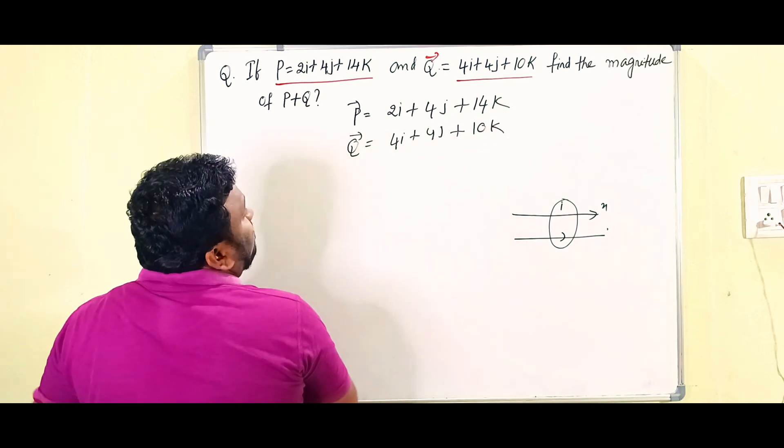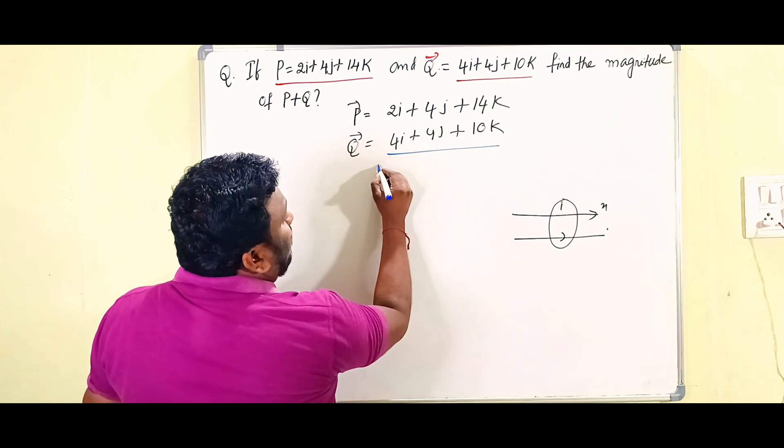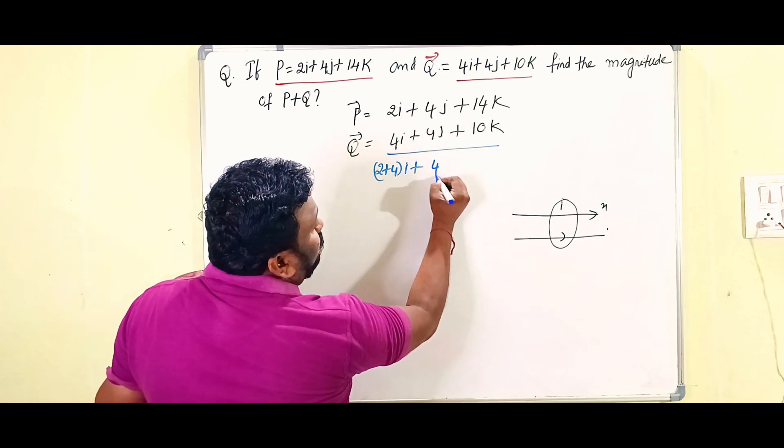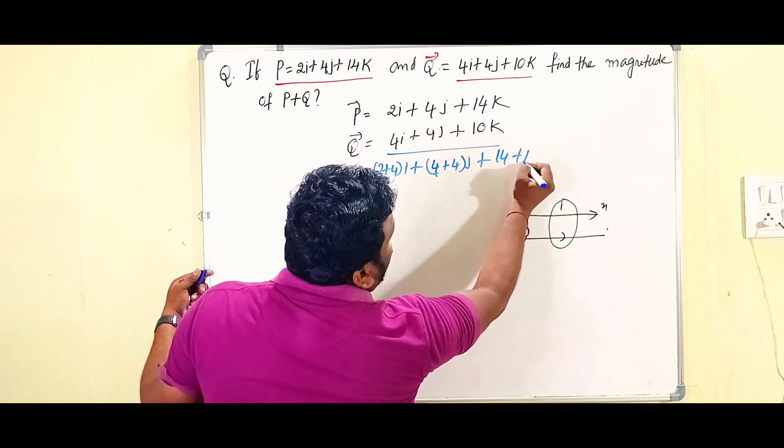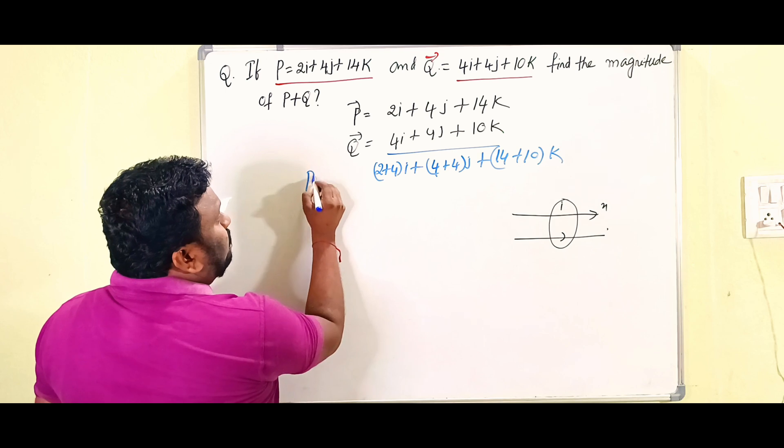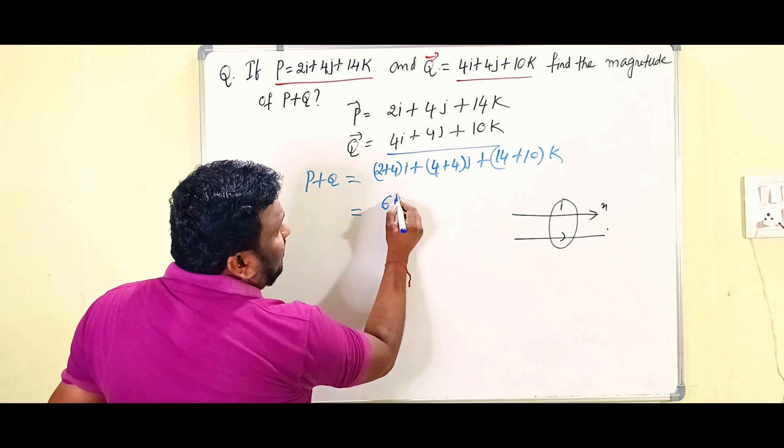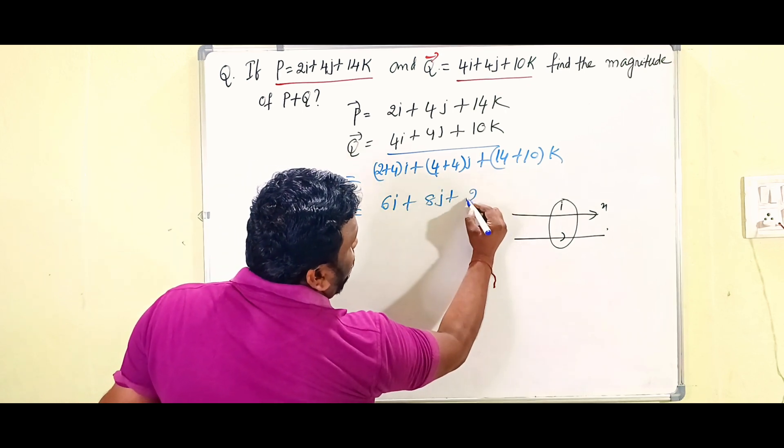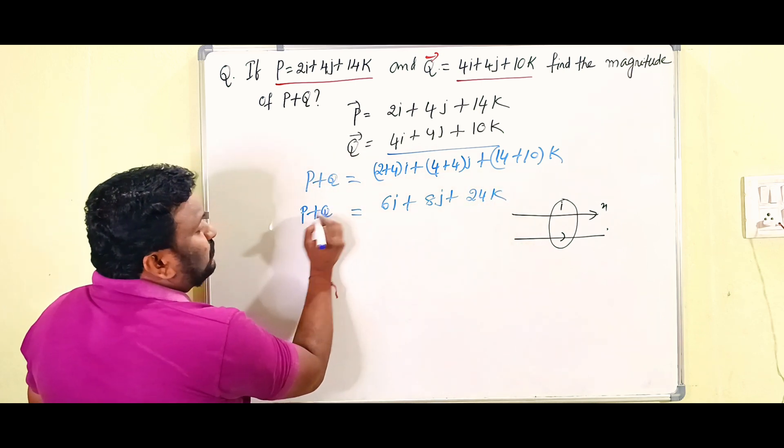So then what you get children: 2 plus 4i, 4 plus 4j, plus 14 plus 10k. Clear. So then this is what P plus Q. So now children, what you get: 2 plus 4 is 6i, 4 plus 4 is 8j, plus 14 plus 10 is 24k. So this is the P plus Q.